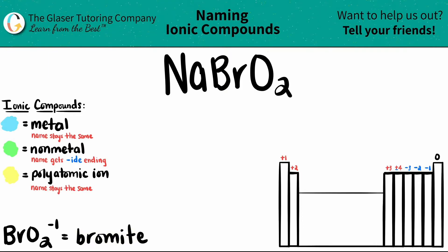So BrO2 is our polyatomic ion, which means that the other one, Na, is a metal. Ionic compounds generally, if you only have one polyatomic, you're going to have a metal in there. I know it's a metal because it's over here on the periodic table — it's in metal territory.